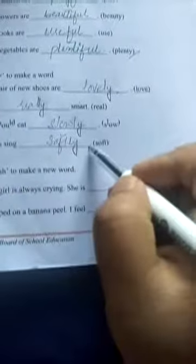Question number seven is add 'ish' to make a new word. Words are given, we have to add 'ish' and make a new word.